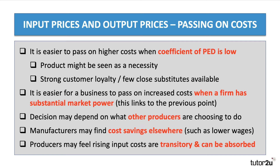Typically, when costs are rising, it is easier to pass on higher costs when the coefficient of price elasticity of demand is low. The final product might be seen as a necessity, or it might have strong consumer loyalty in a market where there are relatively few close substitutes for people to switch to.